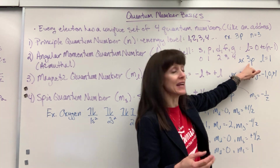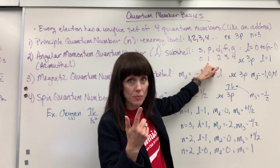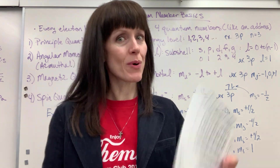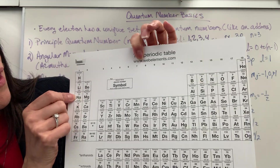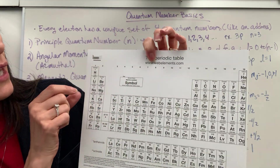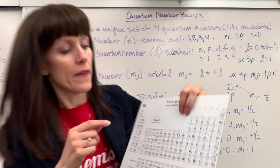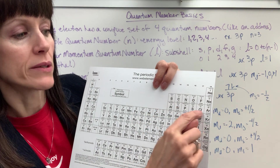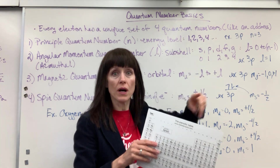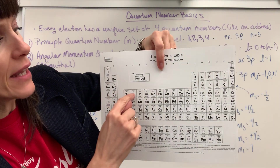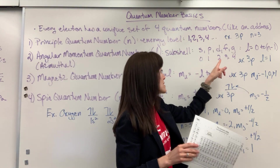That indicates that in the third energy level, we have zero — that's an S — we have one — that's the P — and we have a D. Let me show you on the periodic table. There's your three S and three P. Energy level three S would be angular momentum zero. Energy level three, principal quantum number three, in the P subshell, the angular momentum L is one. And then energy level three in the D subshell, that angular momentum is two.